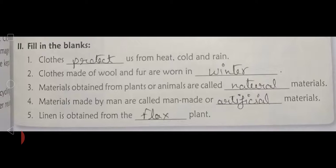Number five: Linen — L I N E N — is obtained — O B T A I N E D — from the flax — F L A X — plant — P L A N T. Full stop. Your fill in the blanks is now completed.